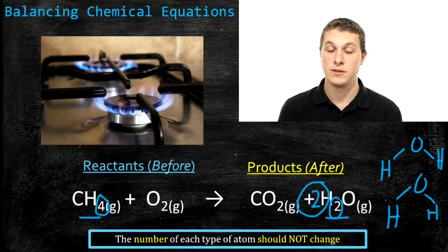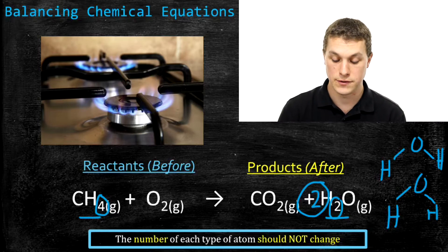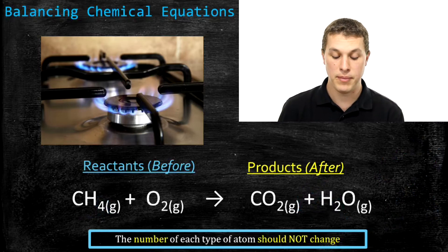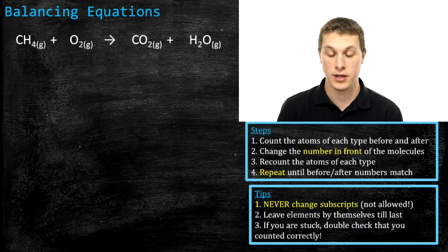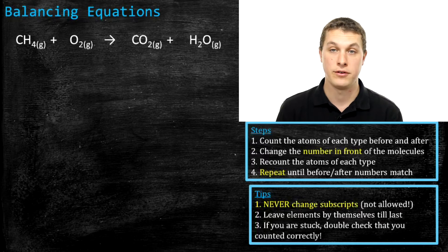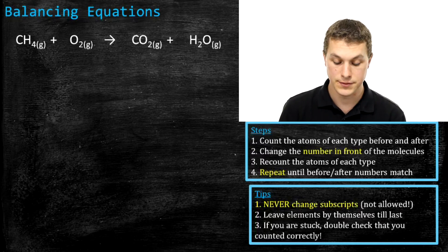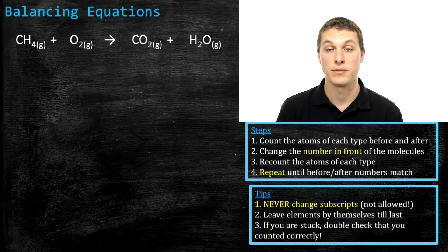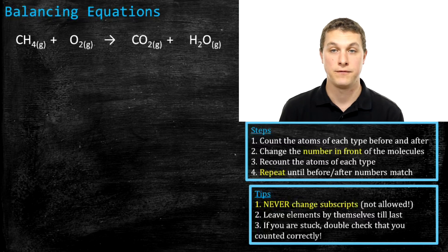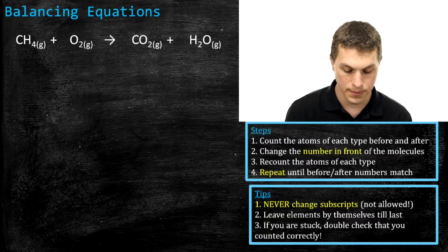It takes some guessing and checking to figure out what coefficients to write so that our equations are balanced. Here are the steps: first, count the atoms of each type in the reactants and products. Then change the number in front of those molecules, and recount the atoms. Do that until the number of atoms of each type before and after are the same.